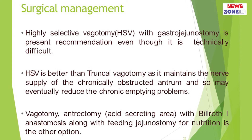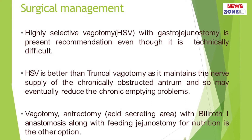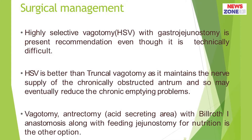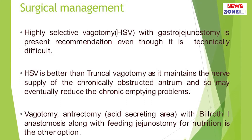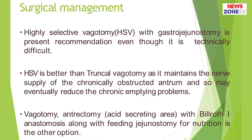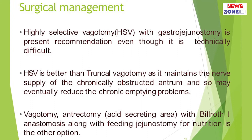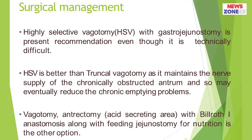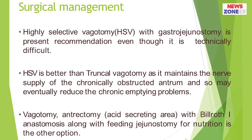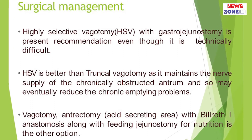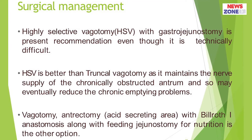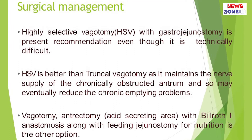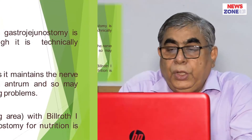It is better to do highly selective vagotomy. Therefore, vagotomy and antrectomy with Billroth-1 anastomosis, along with feeding jejunostomy for nutrition, is another option.